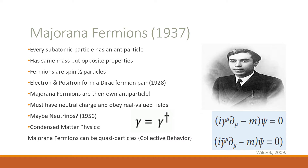From particle physics, we know that every subatomic particle has a counterpart — an antiparticle with the same mass but opposite properties such as charge and magnetic moment. Fermions are spin one-half particles, and an example of an antiparticle pair are the electron and positron, which are known as Dirac fermions. Ettore Majorana proposed in 1937 that there must be a special case where particles behave as their own antiparticle. These Majorana fermions must have neutral charge and obey real-valued fields.